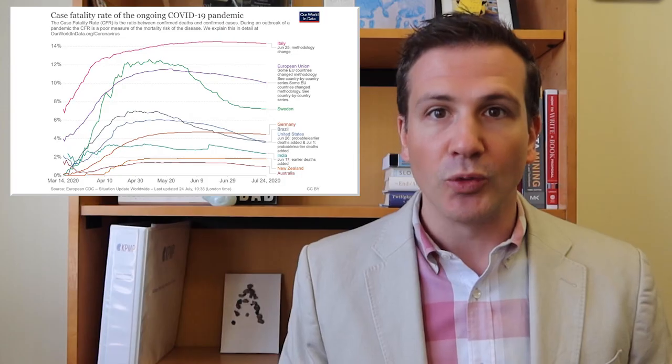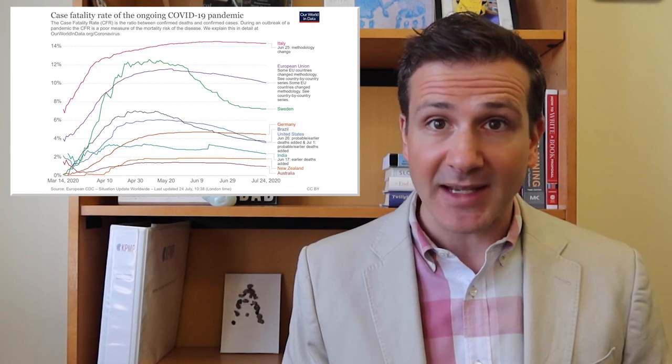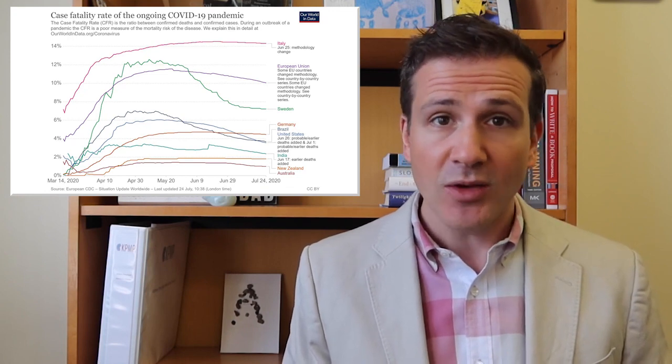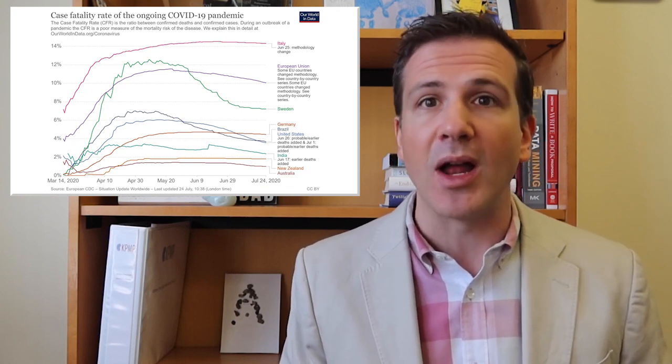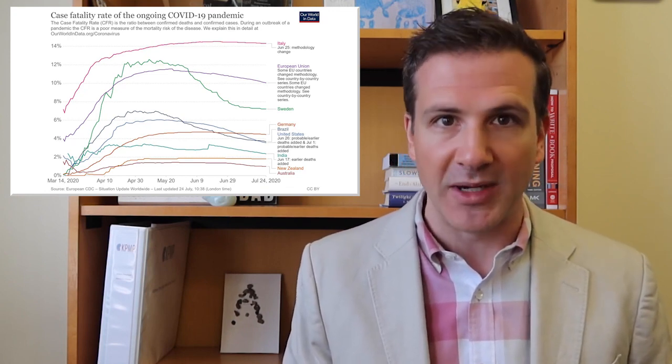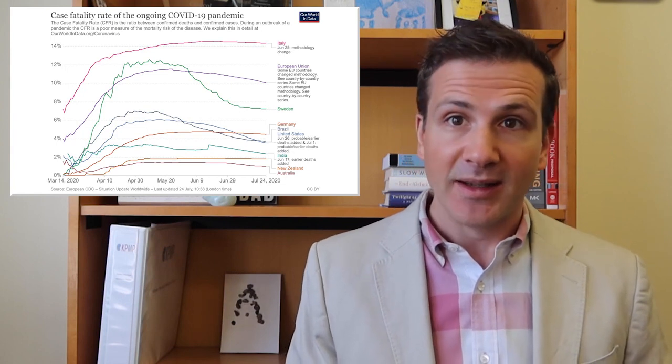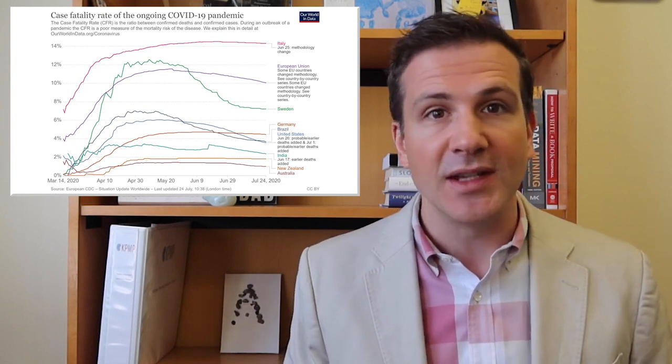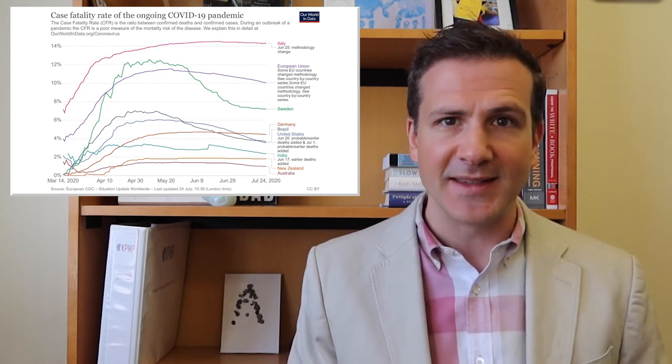As of this recording, there have been 4.2 million confirmed cases of coronavirus in the U.S. and 147,000 deaths for a case fatality rate of 3.5%. If you were to rank the countries of the world with respect to case fatality rate, you'd find the U.S. doing okay — about on par with Germany and Brazil — way better than Italy and worse than New Zealand and Australia, for instance.